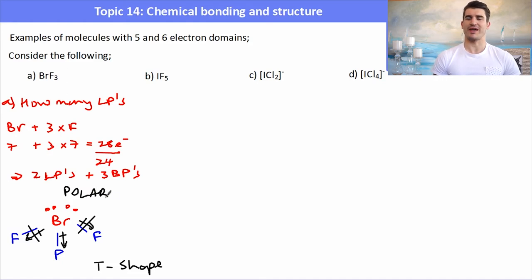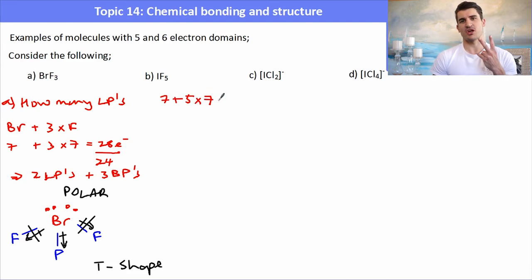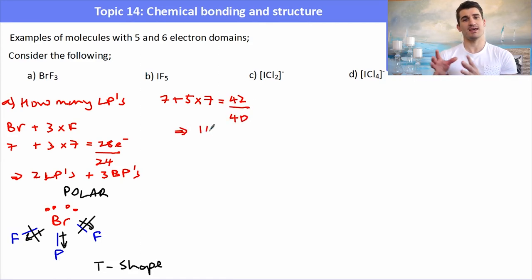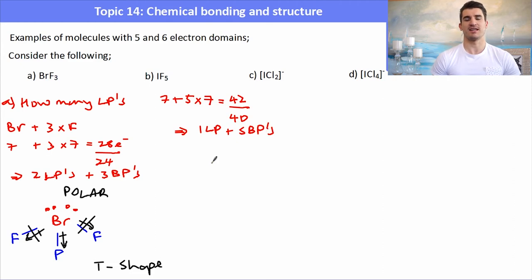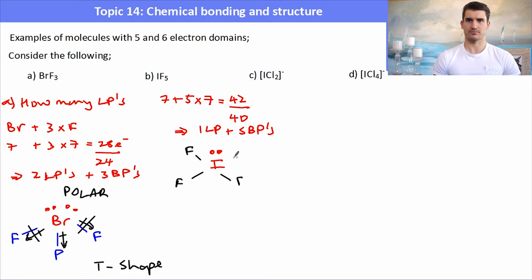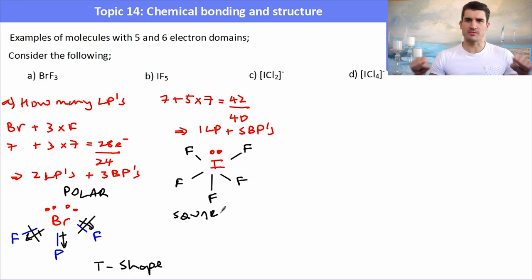For IF5: 7 plus 5 times 7 equals 42 electrons. The nearest octet is 40, so we're 2 electrons away — 1 lone pair. We have 1 lone pair and 5 bonding pairs, giving a square-based pyramid arrangement with 4 fluorines in the plane and 1 above. Is it polar? All the dipoles in the plane cancel out, but the axial fluorine below the plane creates a net dipole, so IF5 is polar.